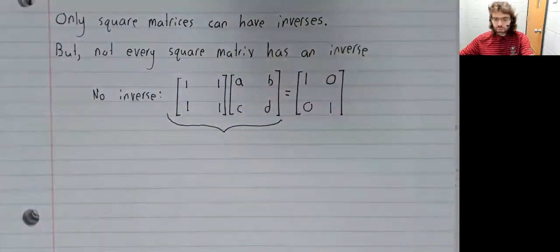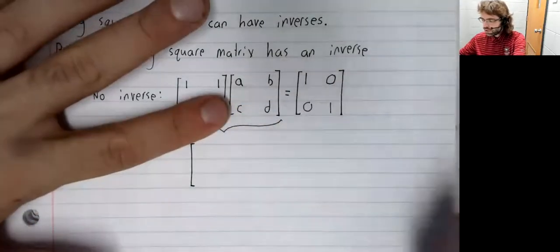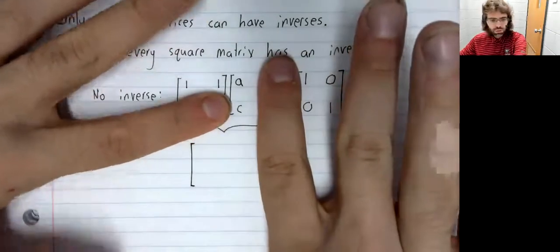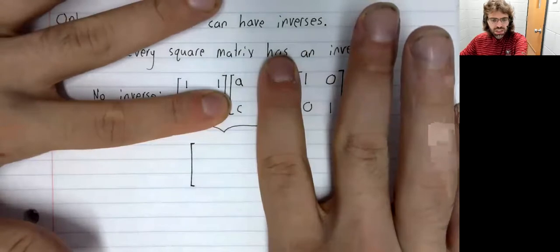But let's do this multiplication. First row, first column: A plus C.